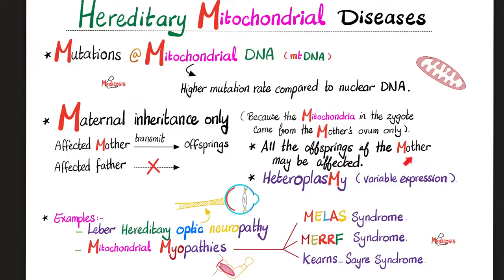All offspring of an affected mother can be affected with a mitochondrial disease, but all offspring of an affected father are not affected at all. Some patients with mitochondrial diseases have a mild form, others have a severe form — this variation in expression is called variable expressivity. This reminds us of heteroplasmy. Remember: mitochondrial diseases and heteroplasmy — they love to ask about this in exam questions.